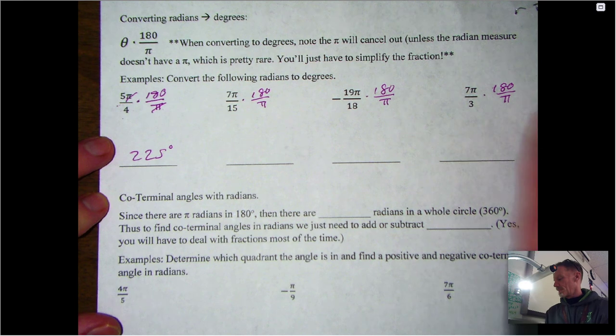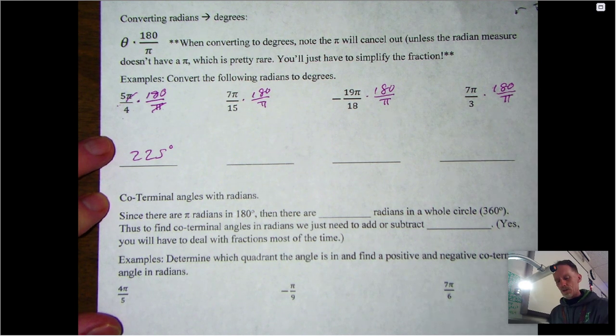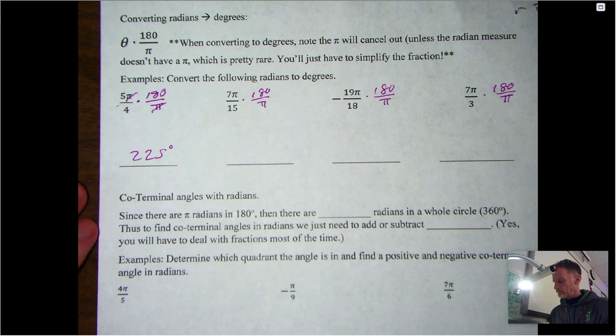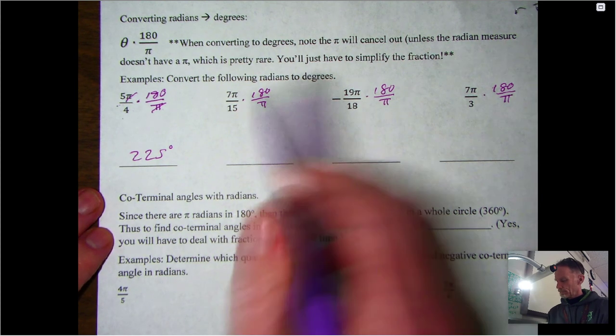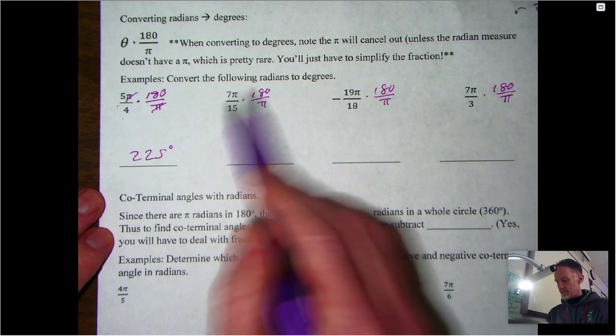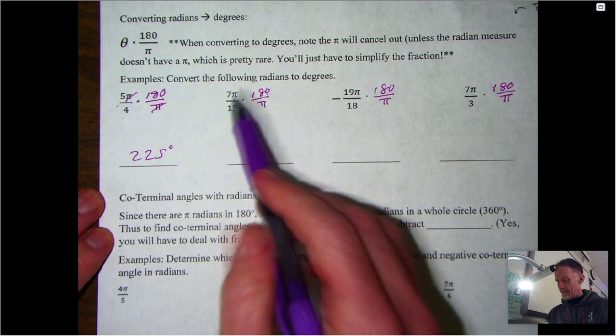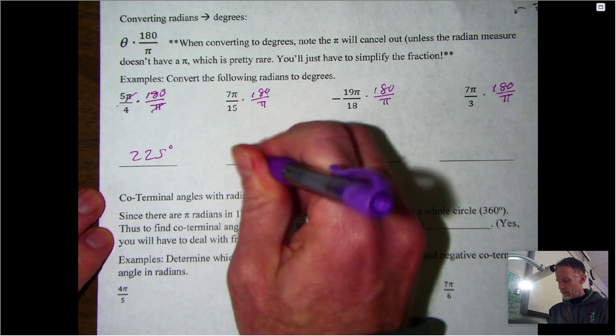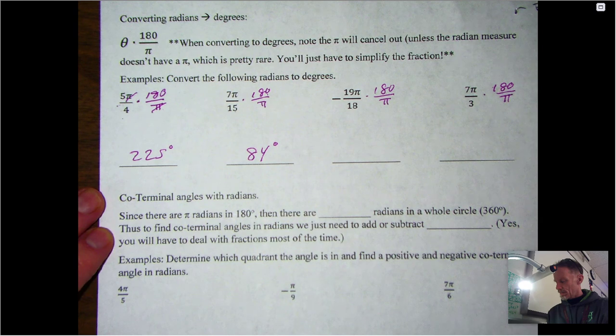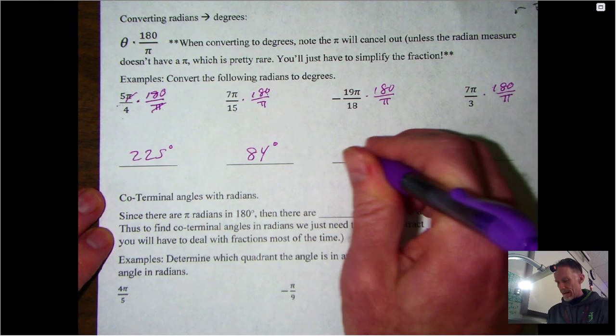Simplifying this fraction again: 180 divided by 15 times 7 would be 84 degrees. Simplify this fraction would be -190 degrees. And then 7π over 3 times 180 over π—simplify that fraction—is going to be 420 degrees.